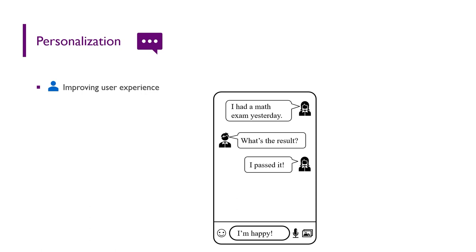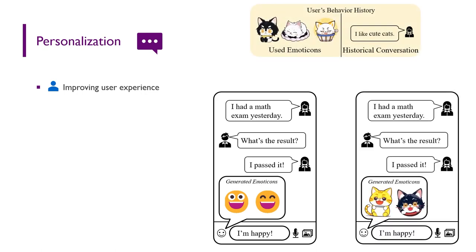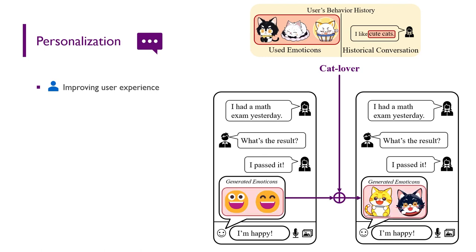when the user types in 'I'm happy,' the chat tool understands the sentiment and provides smiley faces as emoticons of happy for the user to choose and click. For personalization, the chat tool would be able to identify user interests through user behavior and then generate personalized emoticons. In the example, the user has used many emoticons of cats and said 'I like cute cats.' We think she may be a cat lover and replace the normal emoticons with smiling cute cats.